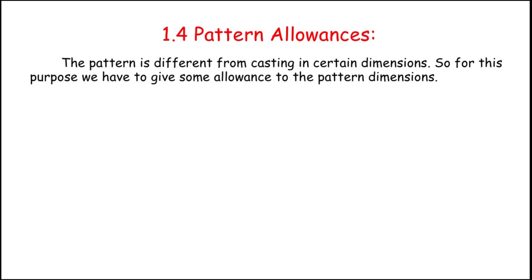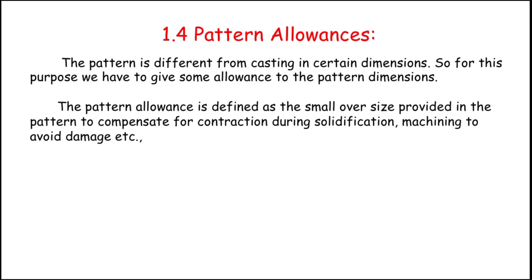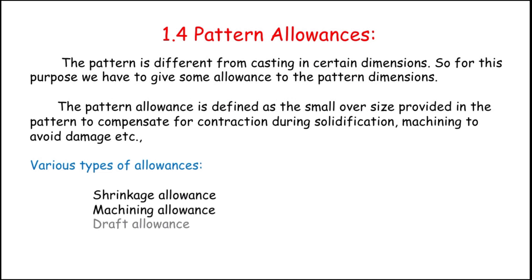Due to some allowances — because of shrinkage under various conditions — if we melt the metal, the volume will increase; if we cool the metal, the volume will decrease due to metal shrinkage. This solidification makes the metal contract. Due to machining, machining allowance, and solidification, we have to make some pattern allowances. The different types of pattern allowances are: shrinkage allowance, machining allowance, draft allowance, distortion allowance, and finally, wrapping allowance.